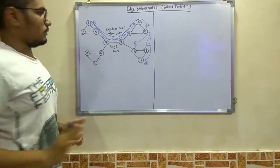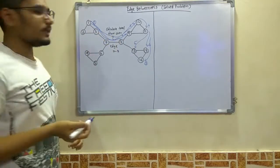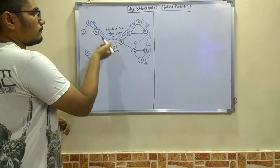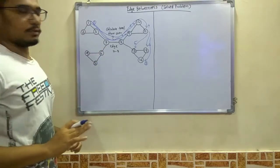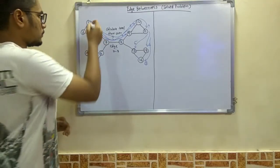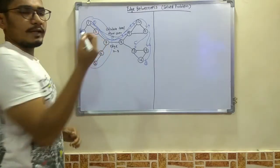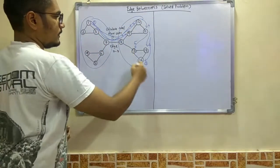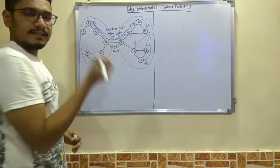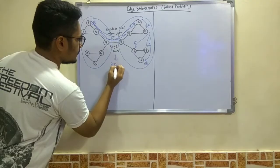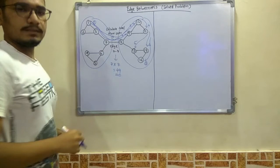This was only for the very first node. Likewise, for node 2 you also have seven different possibilities, for node 3 also seven, and for nodes 4, 5, 6, 7 — all have seven different possibilities. There is a shortcut: since there are seven different nodes on each side, the edge betweenness in this case would be seven multiplied by seven, that is 49.